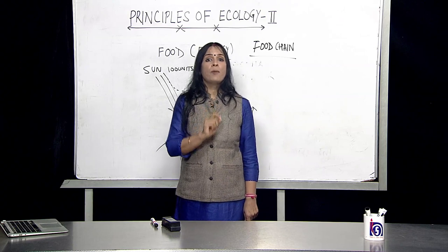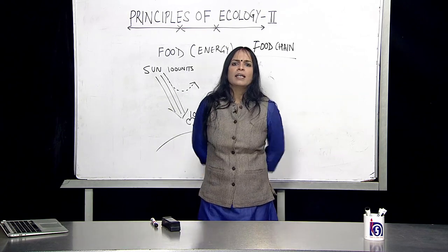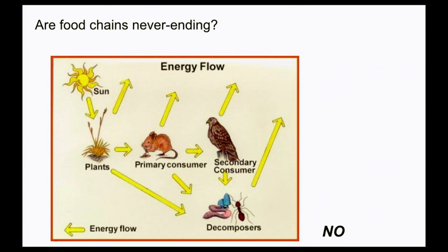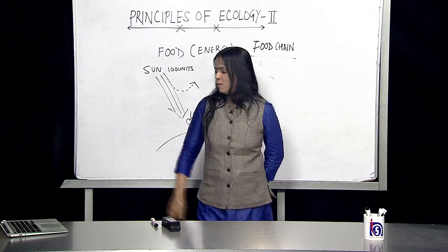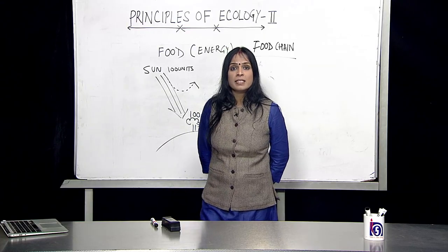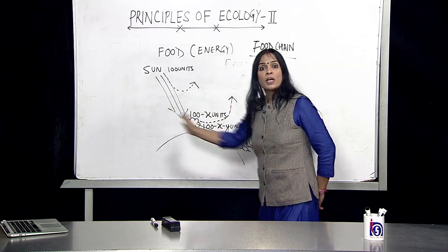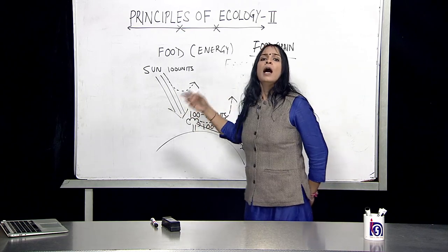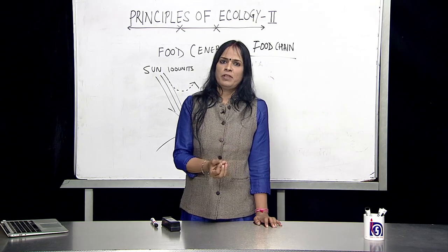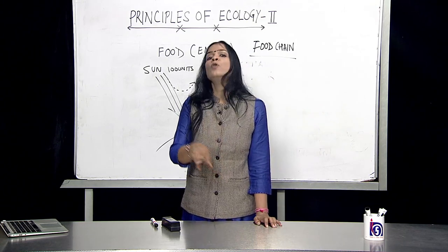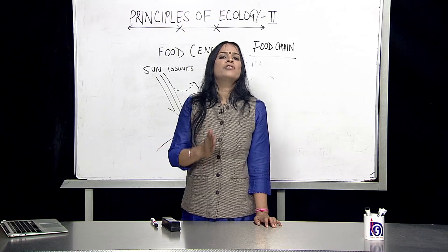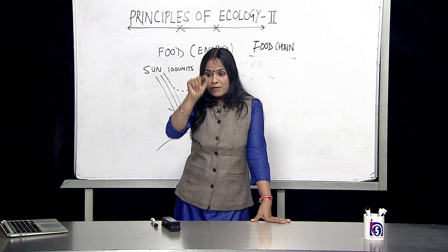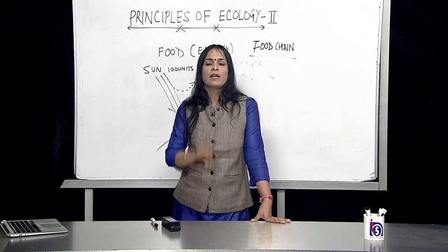Can the food chain go on indefinitely? Can the tertiary consumer be eaten by a next level of consumer? No. Because at every step energy is getting wasted, ultimately at some point such little energy is left in the food chain that that organism can no more become food for another one — and that's where the food chain ends. Food chains do end because energy flows in one direction, and every time it flows, some amount is lost.